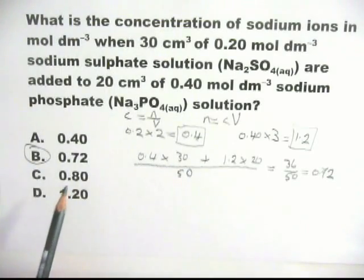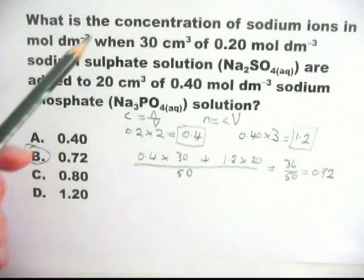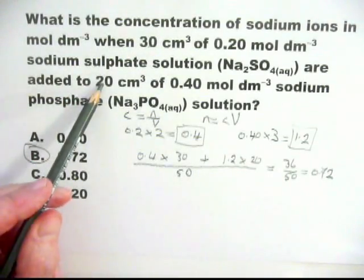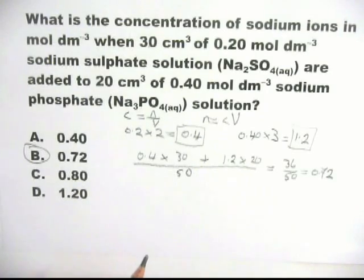We could have only got this if we'd used equal volumes of the two solutions. We didn't. We used 30 centimeters cubed there, 20 centimeters cubed there. Therefore, again, the answer is B, 0.72.